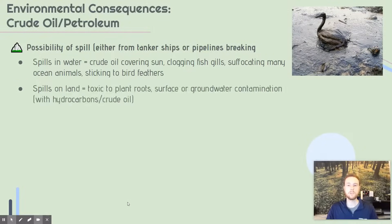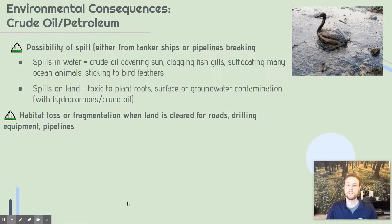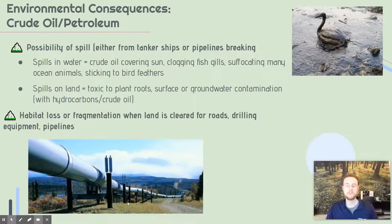If petroleum spills on land, it acts as a toxic chemical to the roots of plants and is also toxic to soil microbes like decomposers or nitrogen-fixing bacteria. To be specific, it's the hydrocarbons in the petroleum that are toxic — we want to avoid using the vague term 'chemical' in APES and instead specify the contaminant. A final common consequence is habitat destruction or fragmentation due to roads, drilling sites, and pipelines — these can fragment forest ecosystems and cut off populations from one another.